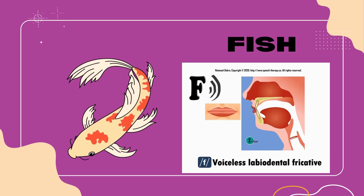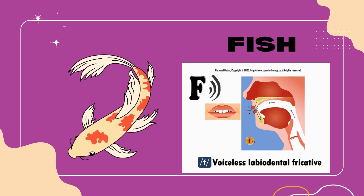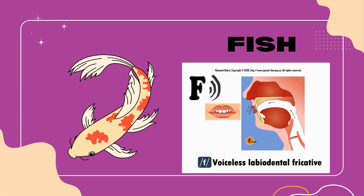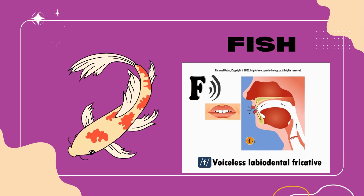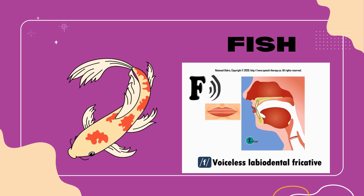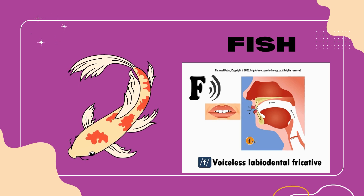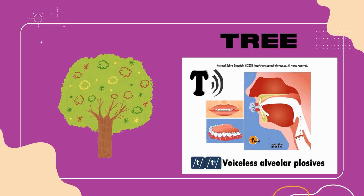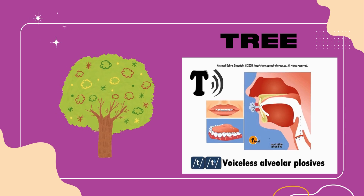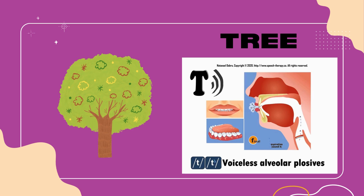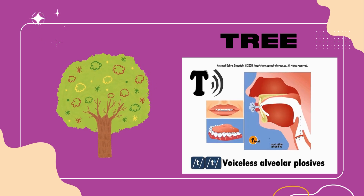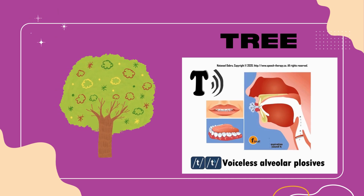Fish showcases the letter F, representing the voiceless labiodental fricative sound F. As we say fish, we gently bring the bottom lip close to the upper teeth, allowing the airflow to create a soft buzzing sound. Next up, tree. The letter T represents the voiceless alveolar plosive sound T. When pronouncing tree, we momentarily block the airflow with the tongue against the alveolar ridge, then release it abruptly.